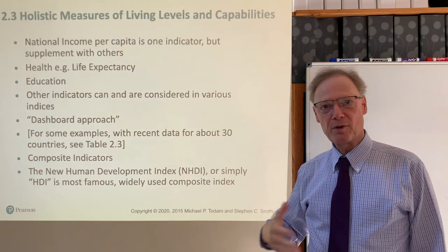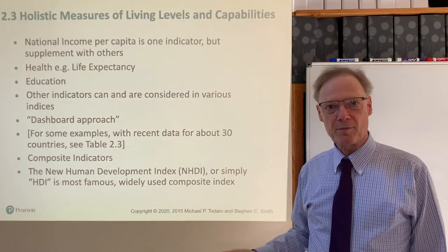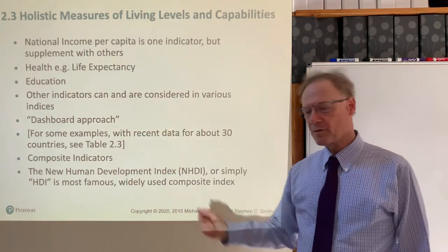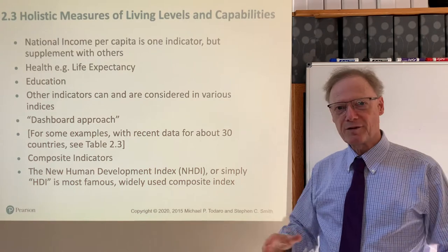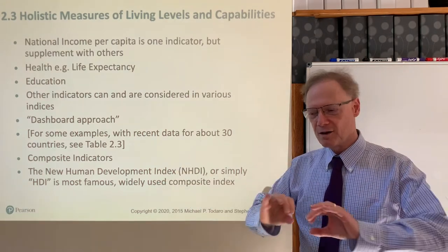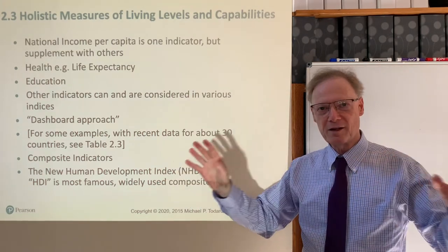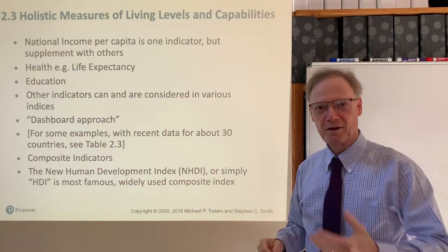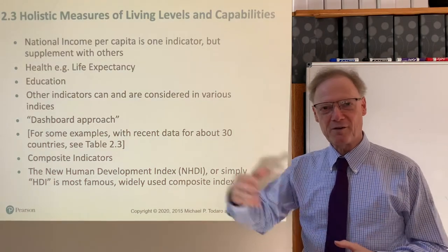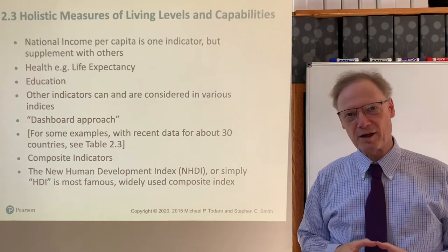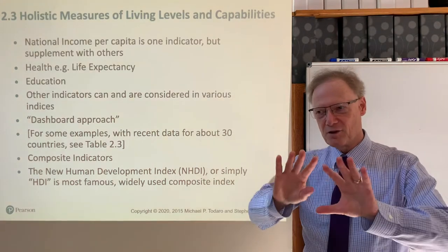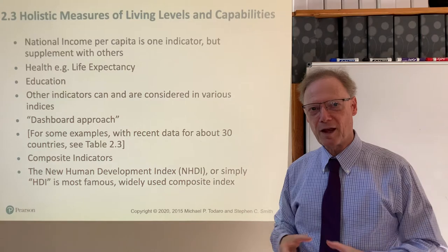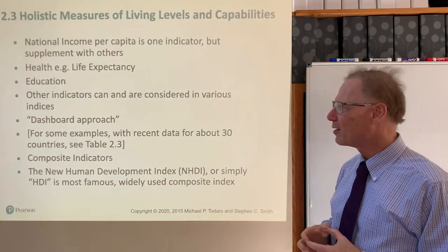We talked about a couple of additional indicators — one was women's economic empowerment. So we can sometimes take a dashboard approach. The analogy here is to the dashboard of your car, in which you have a lot of indicators, such as whether your tires are inflated, how much gas you have, how fast you're going, and things of this kind. Similarly, you can see a broad range of numbers, and there's a table in the text that gives an example of that.